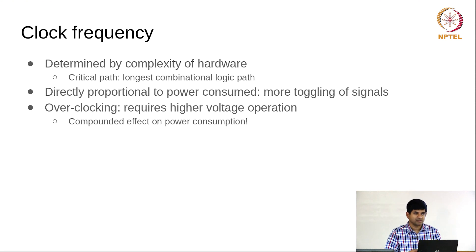Ultimately, the power consumption or energy consumed in any circuit comes down to how many times any given output of a gate switches from 0 to 1 or 1 to 0. The number of times that transition happens is pretty much proportional to the total energy you are going to consume.